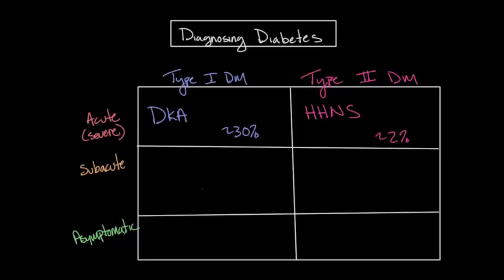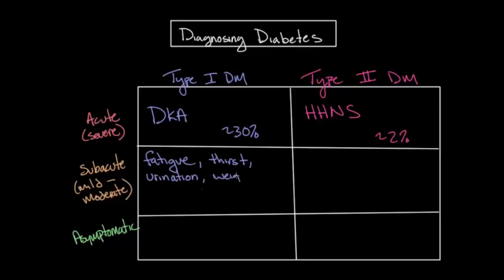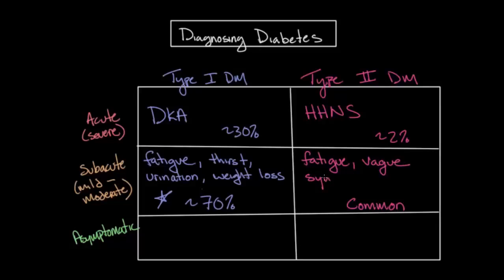The next way individuals with diabetes can present is subacute. This is a mild to moderate presentation that occurs over a period of weeks to months. These individuals, or someone close to them, notice that they are generally just not feeling as well as they normally do. They may experience symptoms of fatigue, increased thirst, frequent urination, or even weight loss. This can occur with either type 1 or type 2 diabetes. In type 1 diabetes, this is the most common form of presentation before diagnosis, accounting for about 70% of individuals. In type 2 diabetes, this is also common; however, the predominant symptoms are a little more vague and weight loss is less common.